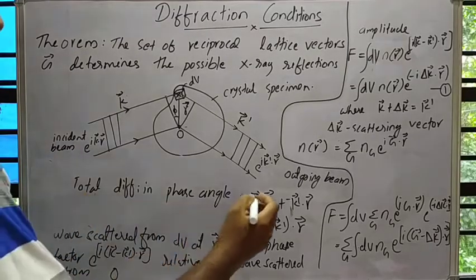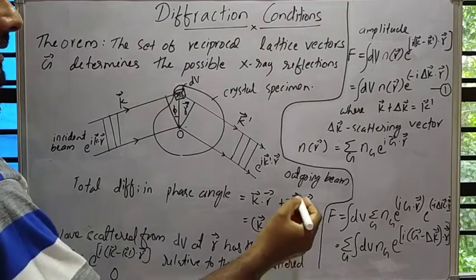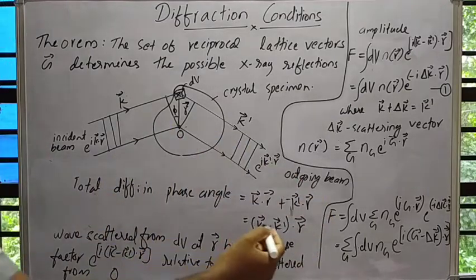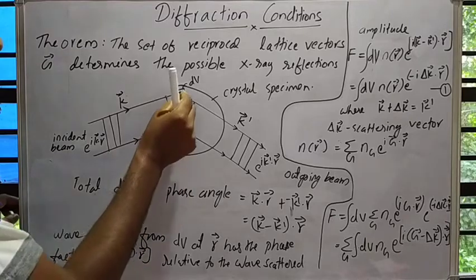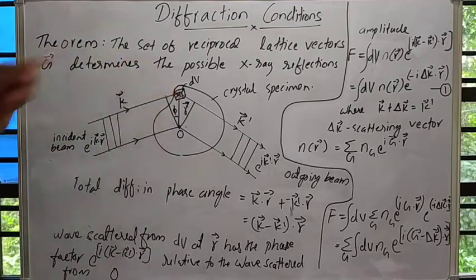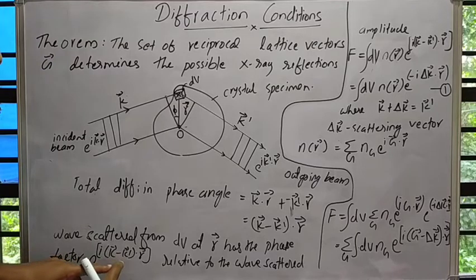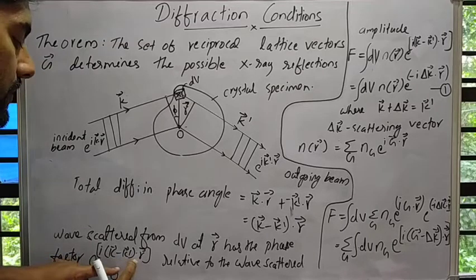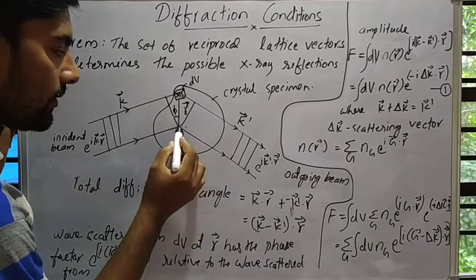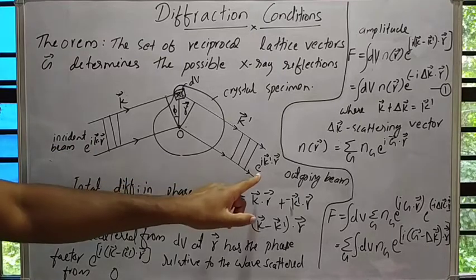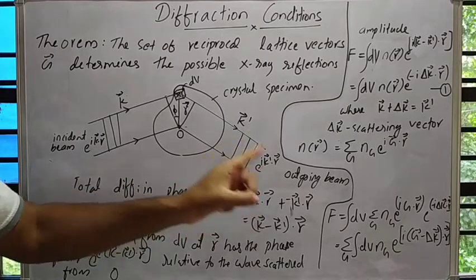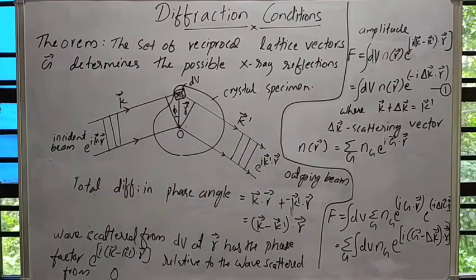The total difference in phase angle is k·r minus k'·r, which equals (k − k')·r. The wave scattered from a small volume element dV at position r has the phase factor e raised to i(k − k')·r, relative to the wave scattered from the volume element at the origin O. The form of the incident beam is e^(ik·r) and the scattered beam is e^(ik'·r), with phase factor e^(i(k − k')·r).